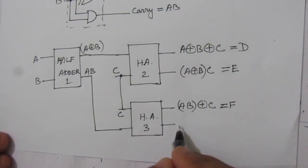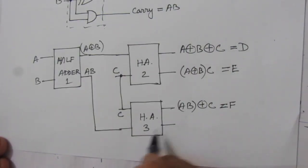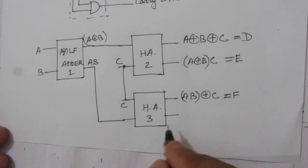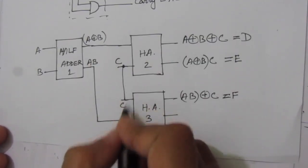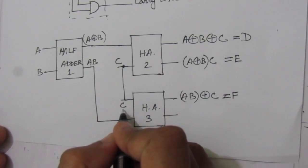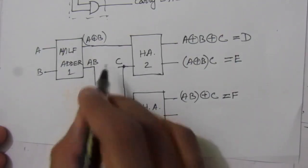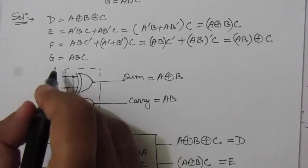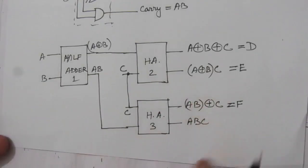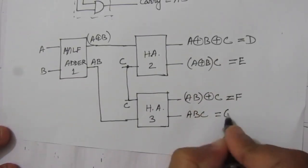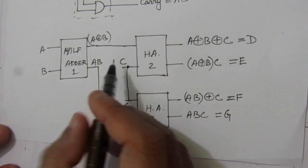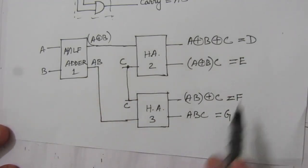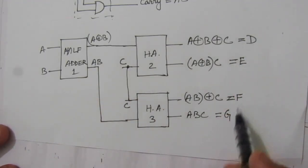At the final carry output of the third half adder, we multiply the two inputs C and A·B, giving us A·B·C, which is nothing but function G. So using these three half adders, we have implemented the functions D, E, F, and G.